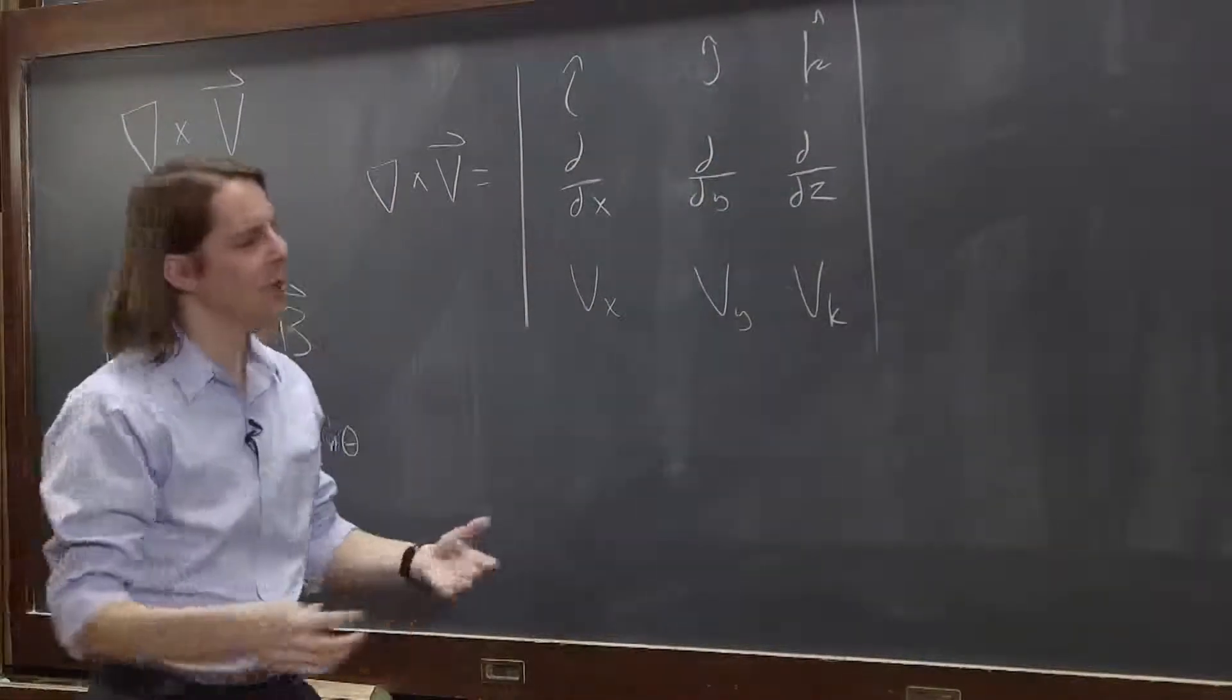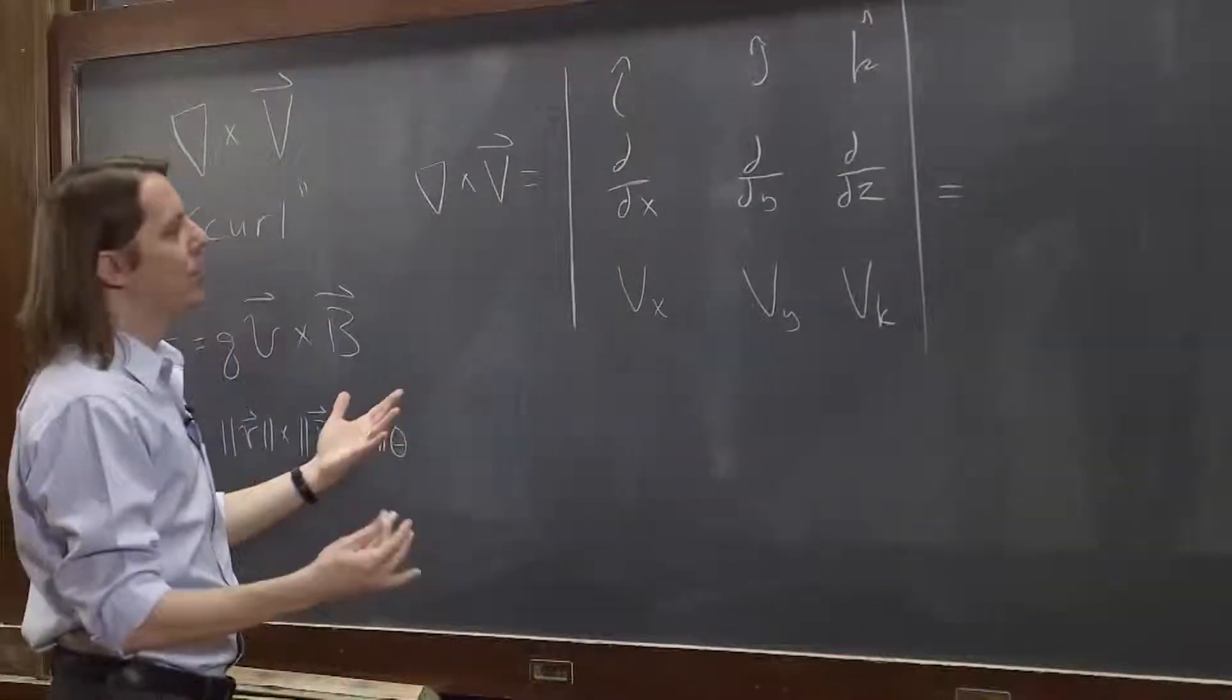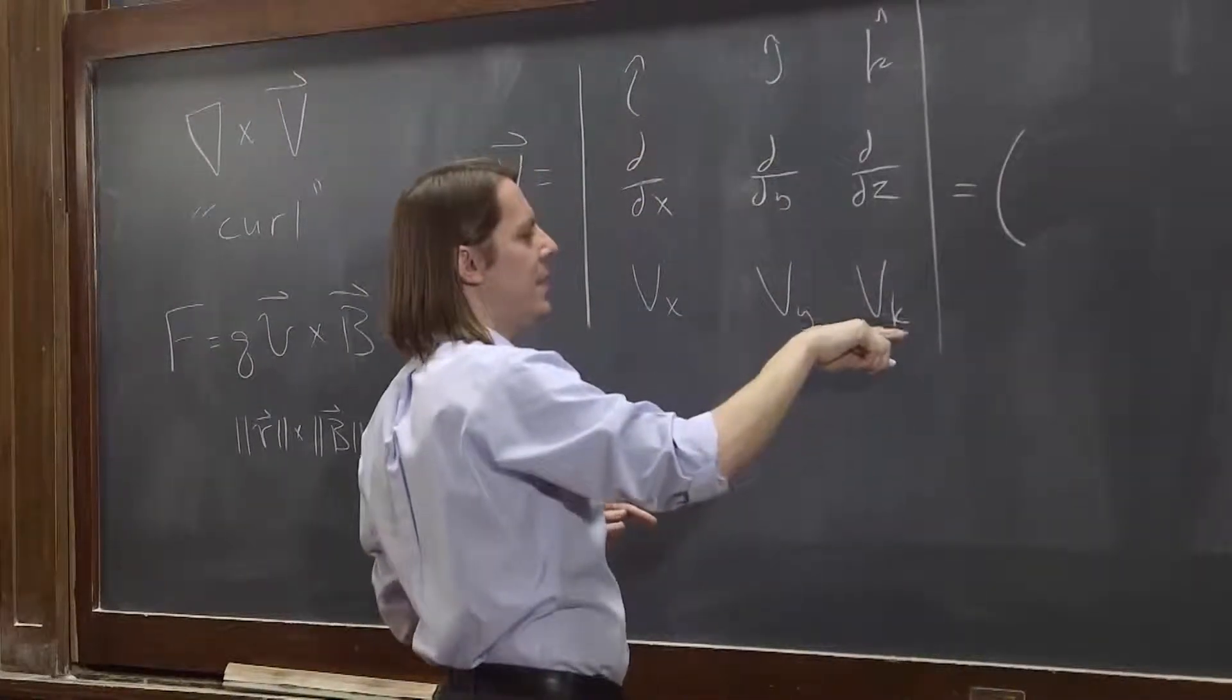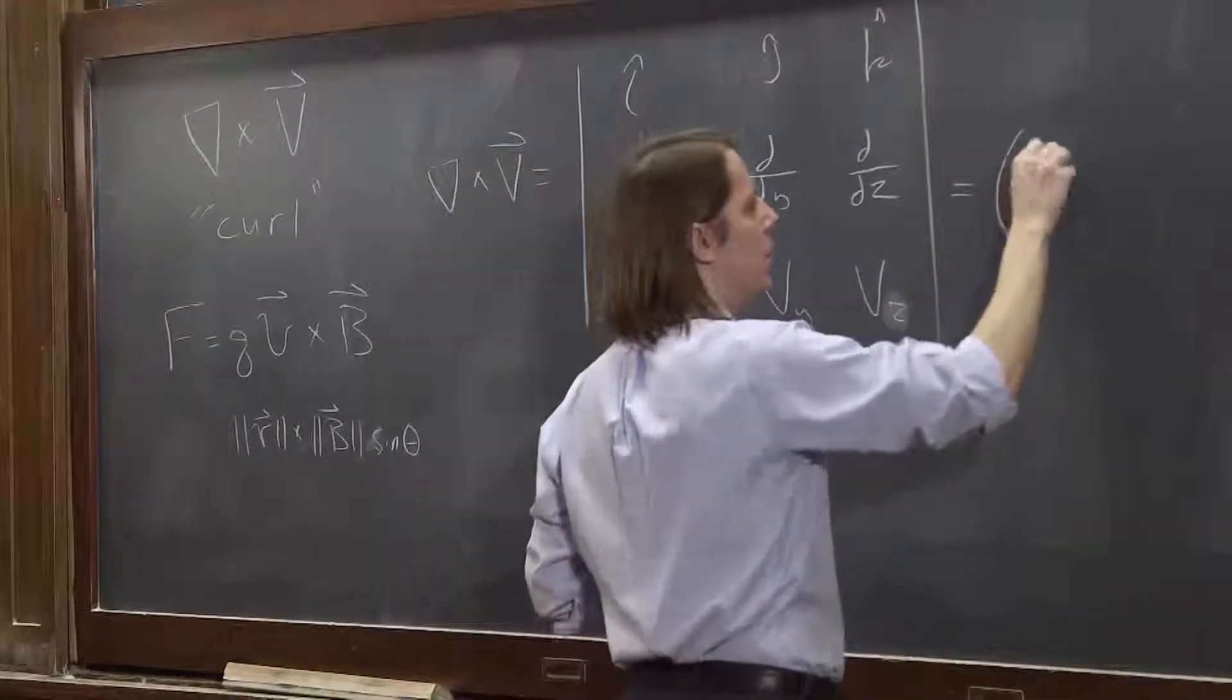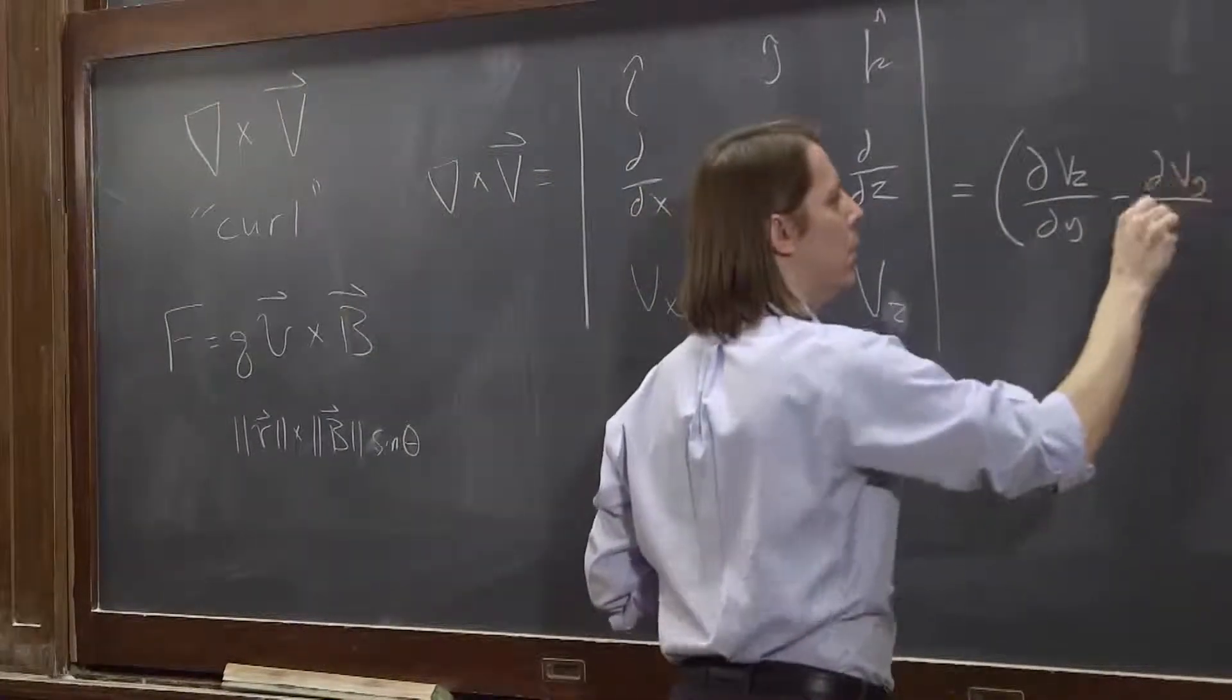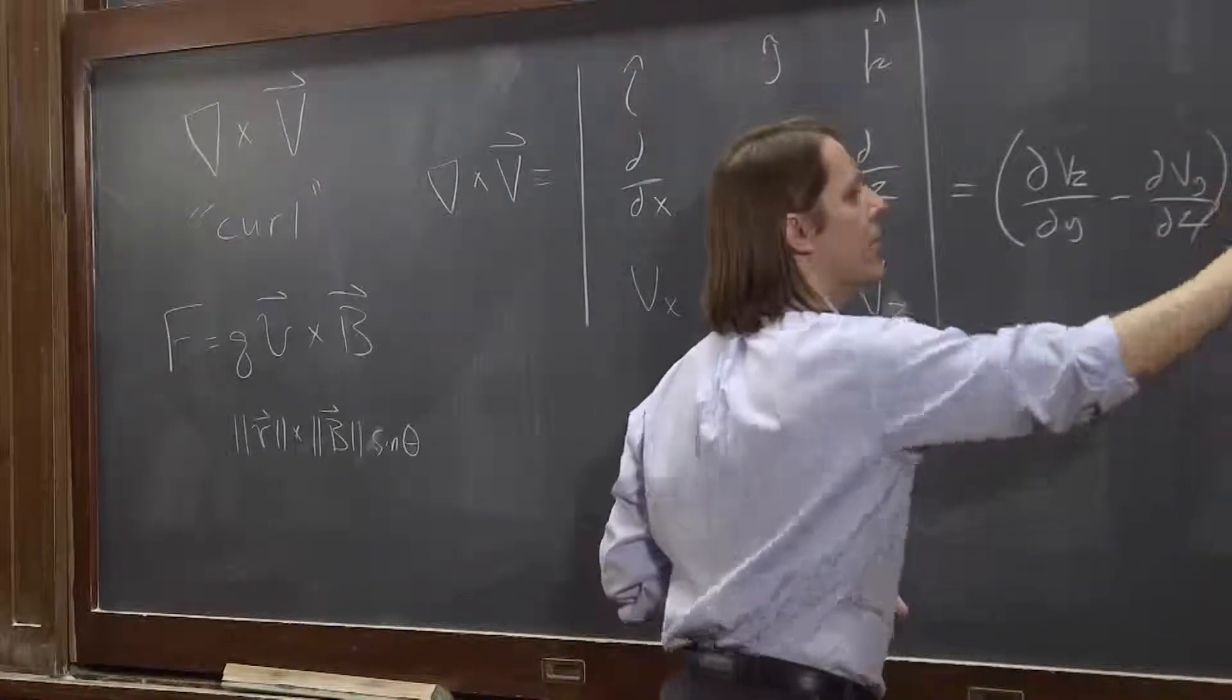Maybe you've seen it before. I won't belabor it because it's math. But if we really wanted to write this all the way out, we would see that on i hat it's dv_z/dy minus dv_y/dz. That's the i hat component.